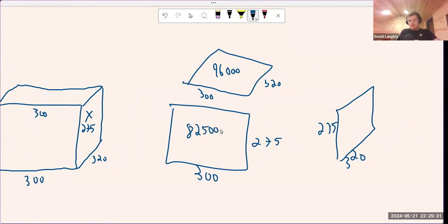And then 275 by 320 is 88,000. We're not done though. We can't just add these three up together and be done because how many of each one is there?